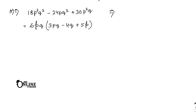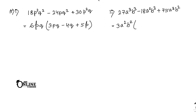Sum number 5.2: 27a³b³ - 18a²b³ + 75a³b². The HCF of 27, 18, and 75 is 3. The smallest power of a across all terms is a², and the smallest power of b is b². So the common factor is 3a²b². Inside the bracket: 9ab - 6b + 25a. The answer is 3a²b²(9ab - 6b + 25a).